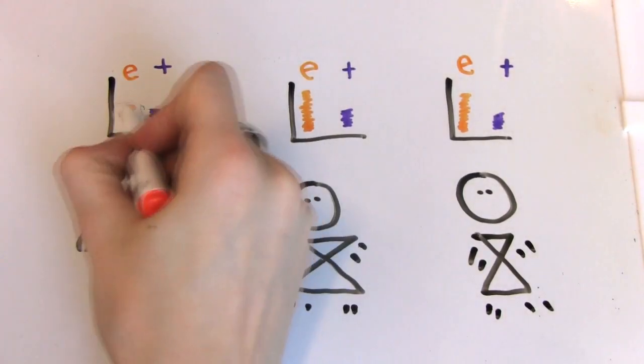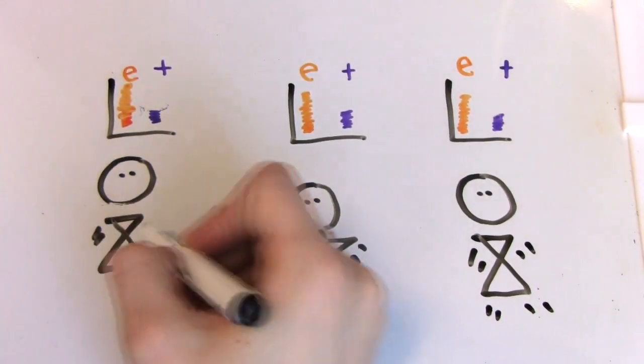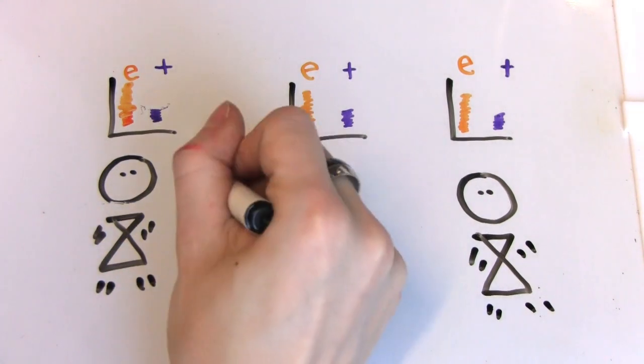usually either testosterone or estrogen. Though everyone has both testosterone and estrogen in their bodies, taking hormones can change these ratios in someone's body.